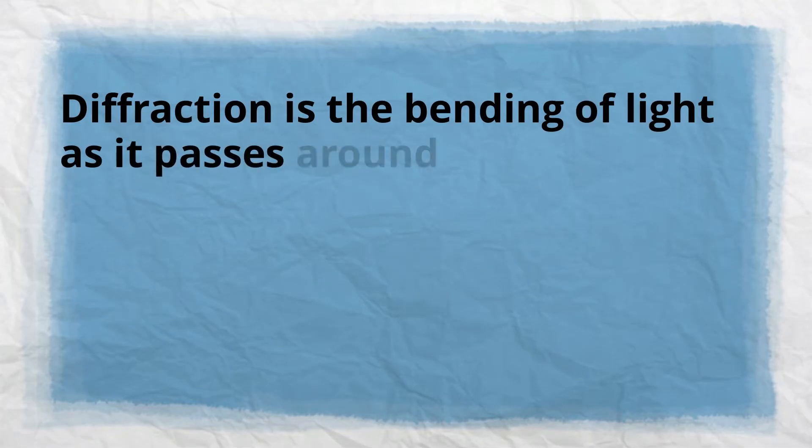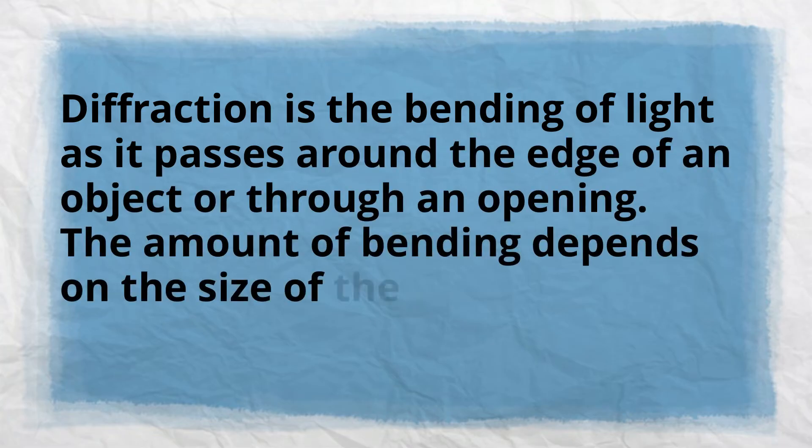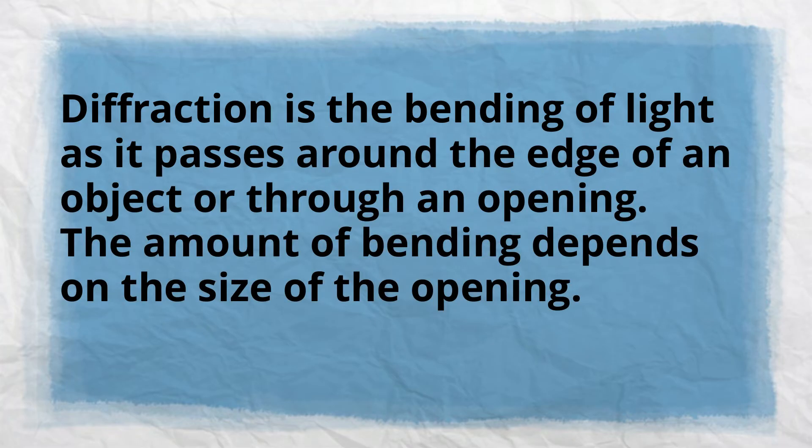Now diffraction is the bending of light as it passes around the edge of an object or through an opening. The amount of the bending depends on the size of the opening.